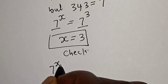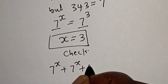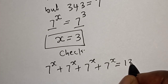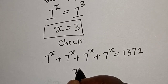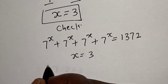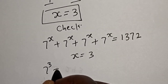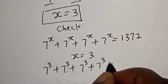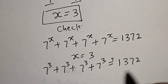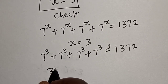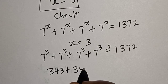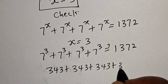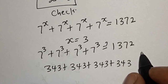We have 7 raised to power s plus 7 raised to power s plus 7 raised to power s plus 7 raised to power s must be equal to 1372. With s equal to 3, we have 7 raised to power 3 plus 7 raised to power 3 plus 7 raised to power 3 plus 7 raised to power 3 must equal 1372. 7 raised to power 3 is 343, so 343 plus 343 plus 343 plus 343.